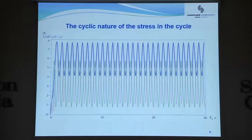For example, here we can see the cyclic nature of stress in each cycle for three different states. The blue curve is for shakedown. Green curve is for cyclic plasticity. And the red one is for ratcheting.